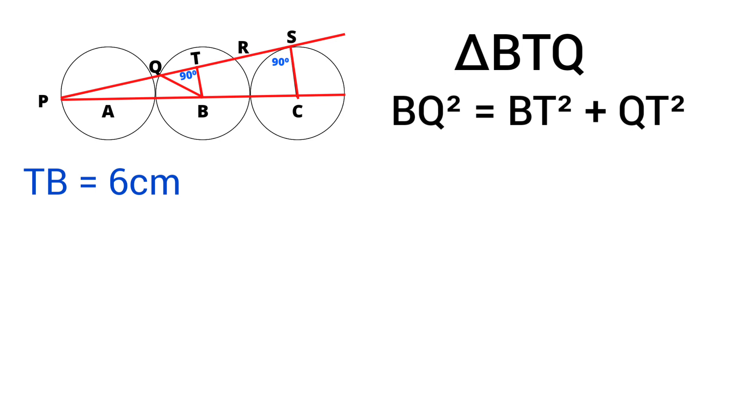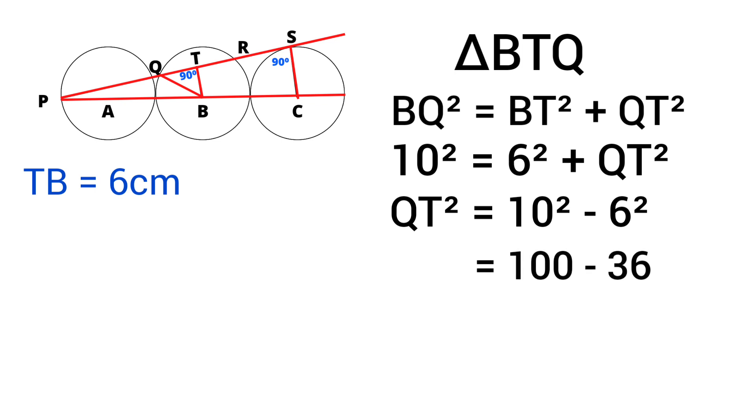Length of BQ equals 10 cm which is the radius of the circle. So 10 square equals, length of BT is 6 cm, 6 square plus QT square. Then QT square equals 10 square minus 6 square which equals 100 minus 36.